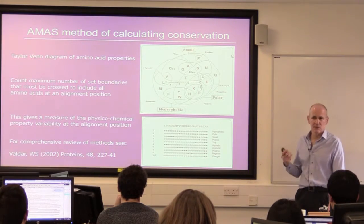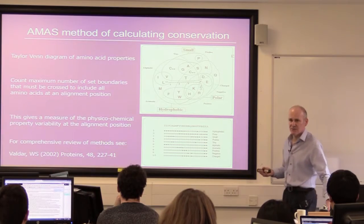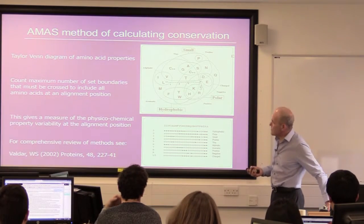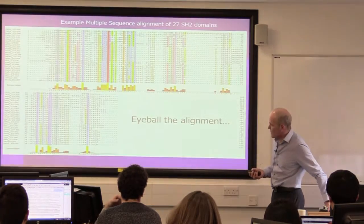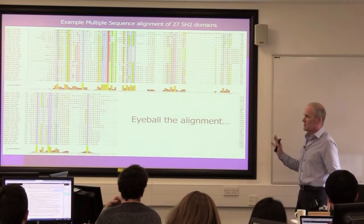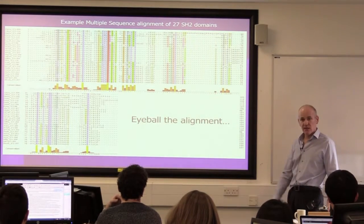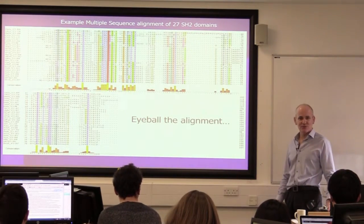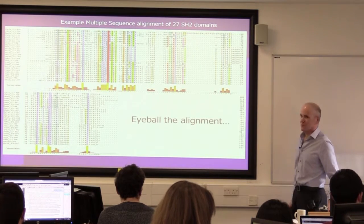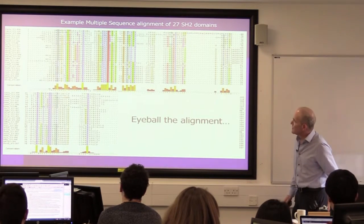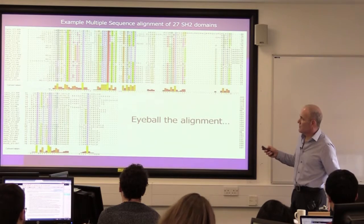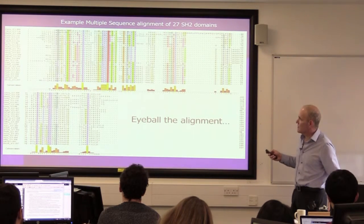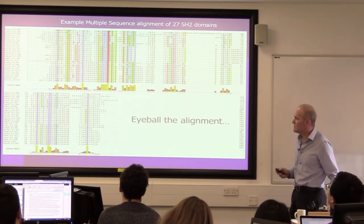We've implemented all of them in Jalview, so they're all accessible from within Jalview under the web services menu. They're all there. If you have a particular conservation scheme you really love, somebody told you it was the best thing, then you can probably find it in Jalview. You can eyeball the alignment, look at conserved columns that are colour-coded and see interesting features perhaps.